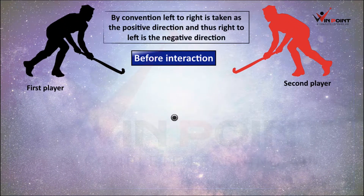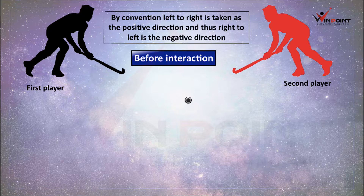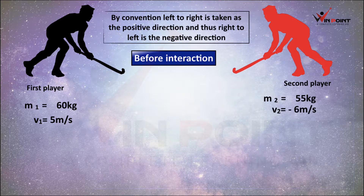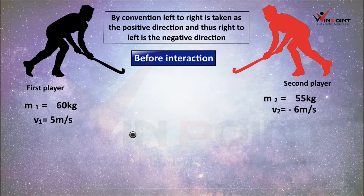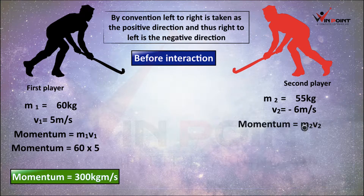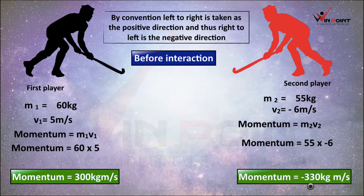By convention, left to right is the positive direction and right to left is negative. Player 1: M1 = 60 kg, V1 = +5 m/s. Player 2: M2 = 55 kg, V2 = −6 m/s (moving toward player 1). Momentum of player 1 = 60 × 5 = 300 kg·m/s. Momentum of player 2 = 55 × (−6) = −330 kg·m/s.